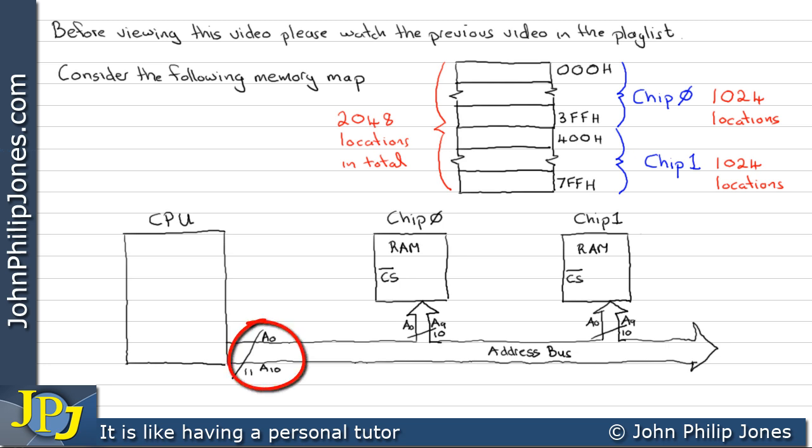We can see here we have A0 to A10 leaving the central processing unit, and we can see here we have from A0 to A9, and here we have A0 to A9 going to both chips. In this case, 10 goes to each.